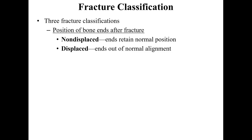Today we're picking up with fracture classification. There are different ways to classify fractures. One way is based on the position of the bone ends after the fracture. It's referred to as non-displaced if the ends retain their normal position. It's called a displaced fracture if the ends are out of their normal alignment.